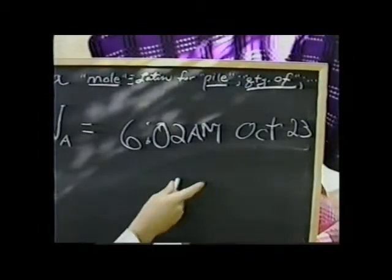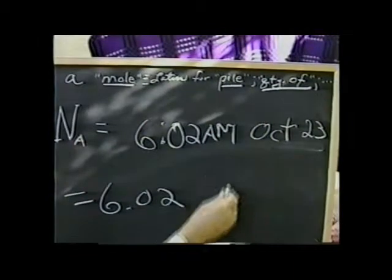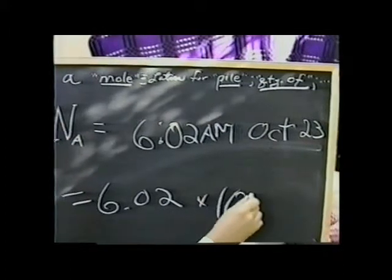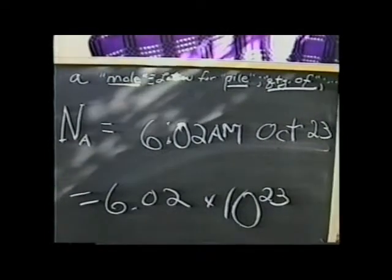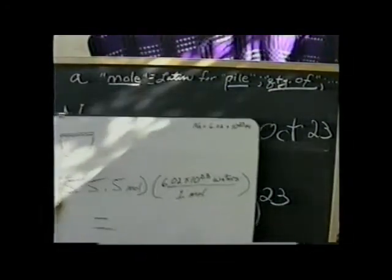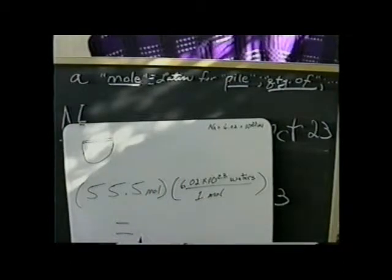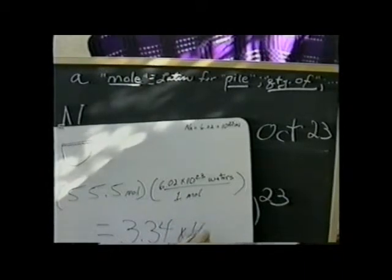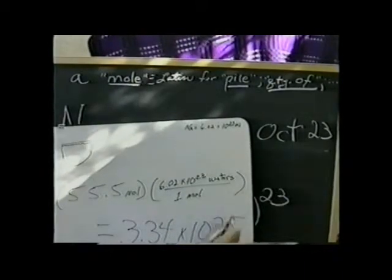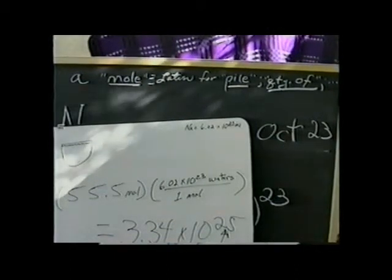Now what this would translate to is 6.02, the 10th month, October, and the exponent 23rd. So in our water, what we see in one liter is the 55.5 moles times Avogadro's number turns out to be about 3.34 times 10 to the 25th power number of water molecules in one liter.